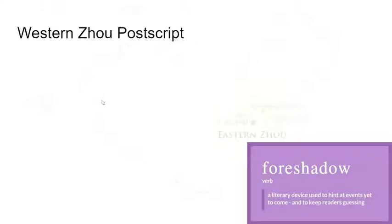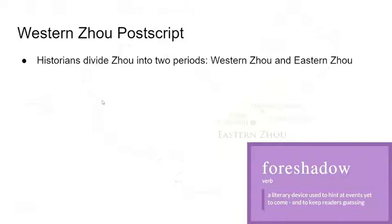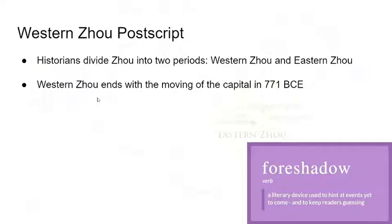Western Zhou postscript: historians divide Zhou into two periods — Western Zhou and Eastern Zhou. Western Zhou ends with the moving of the capital in 771 BCE. Kind of sad, right? You have 250 years of good things, and then one king decides to fool around, and as a result you have the end of a period of a dynasty.